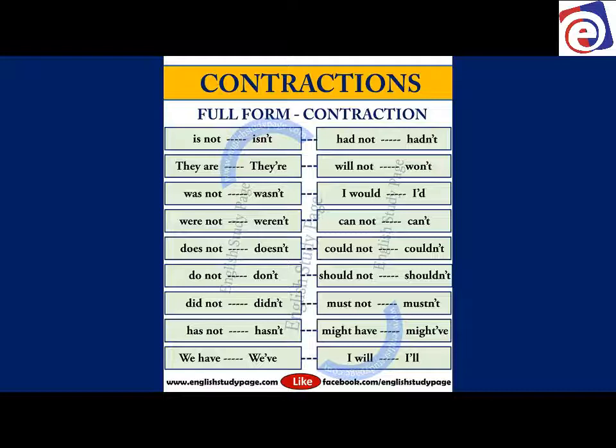These are some common contractions that we use. The full form and contraction: is not / isn't, they are / they're, was not / wasn't, were not / weren't, does not / doesn't, do not / don't, did not / didn't, has not / hasn't, we have / we've, had not / hadn't, will not / won't, I would / I'd, cannot / can't, could not / couldn't, should not / shouldn't, must not / mustn't.